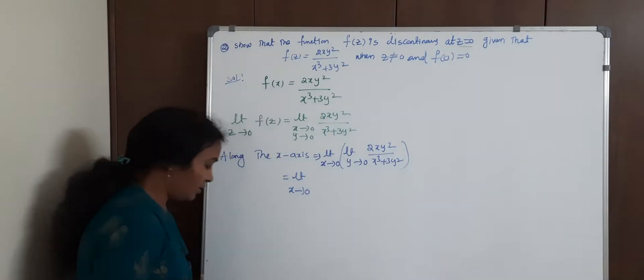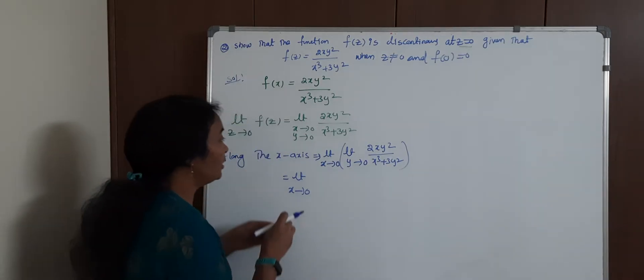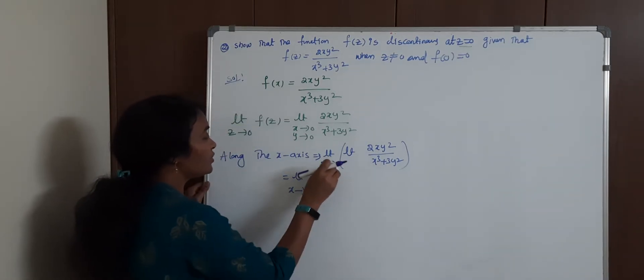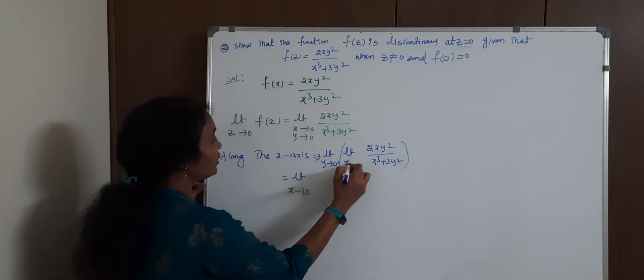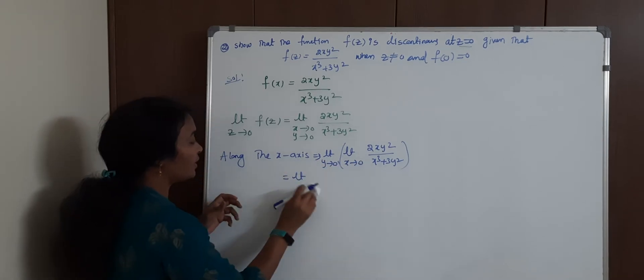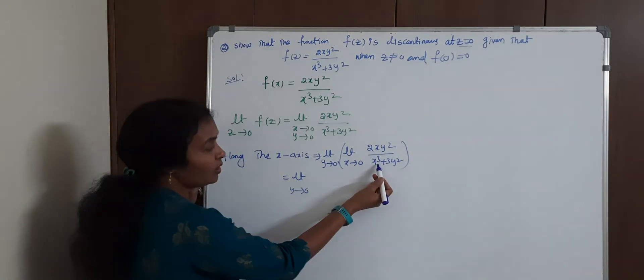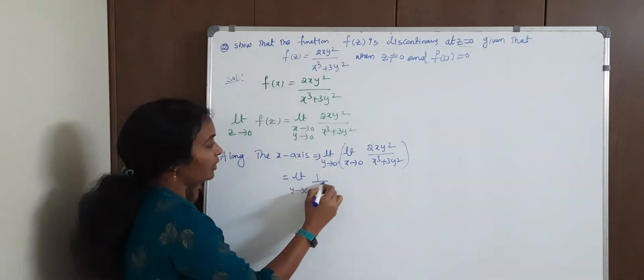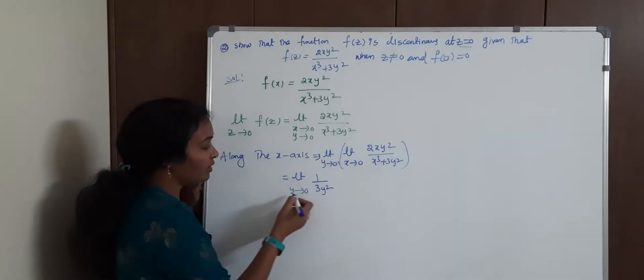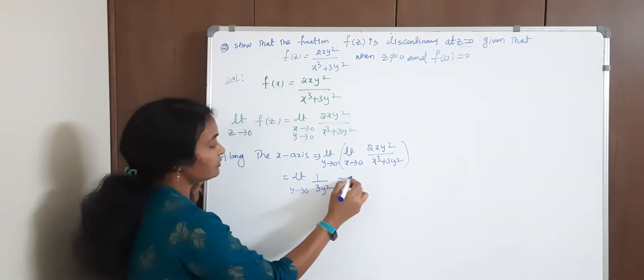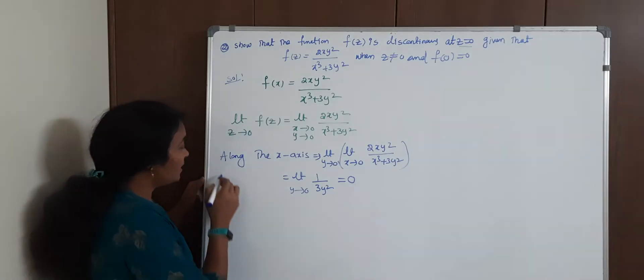When we substitute, limit x→0, substitute y=0. This is 0. What is the remaining term? 1/(3y²). Then put y→0. This will become 0.